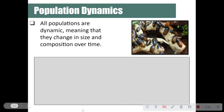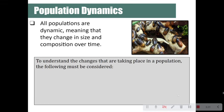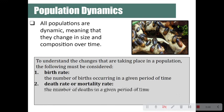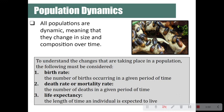All populations are dynamic, meaning they change in size and composition over time. To understand changes in a population, the following must always be considered: birth rate — the number of births occurring in a given period of time; the death rate or mortality rate — the number of deaths in a given period of time; and life expectancy — the length of time an individual is expected to live.